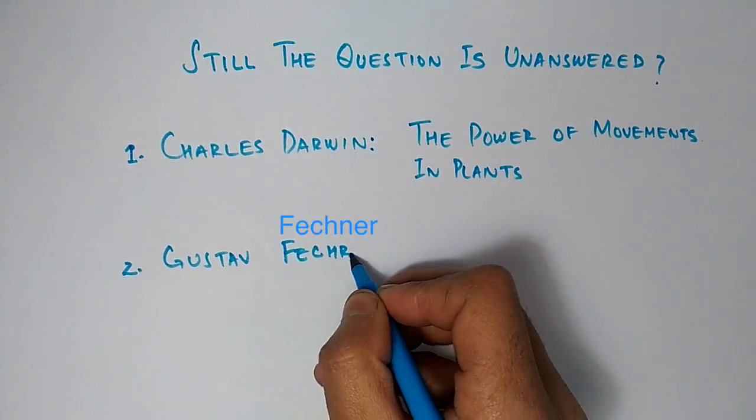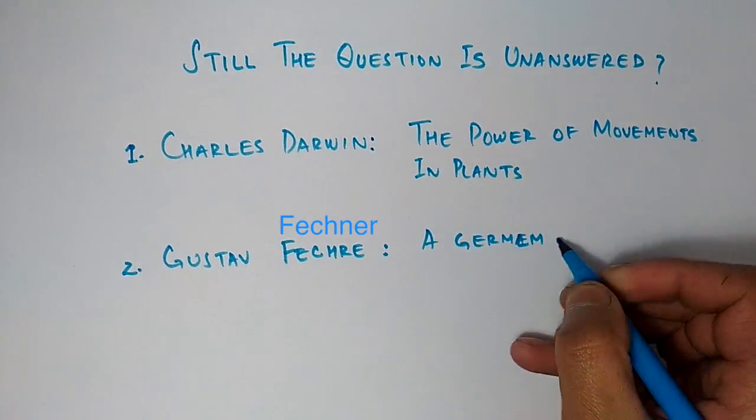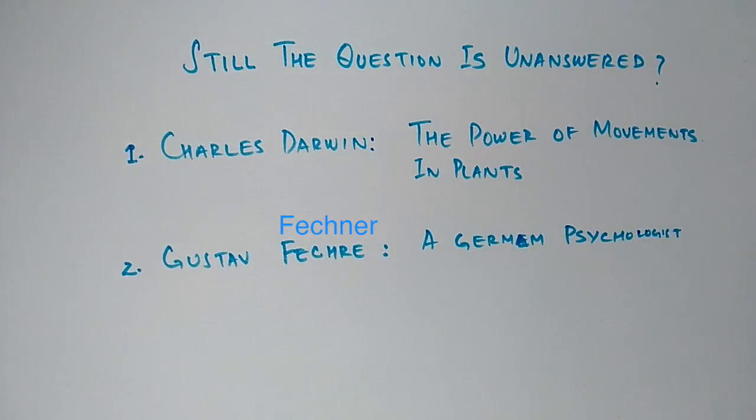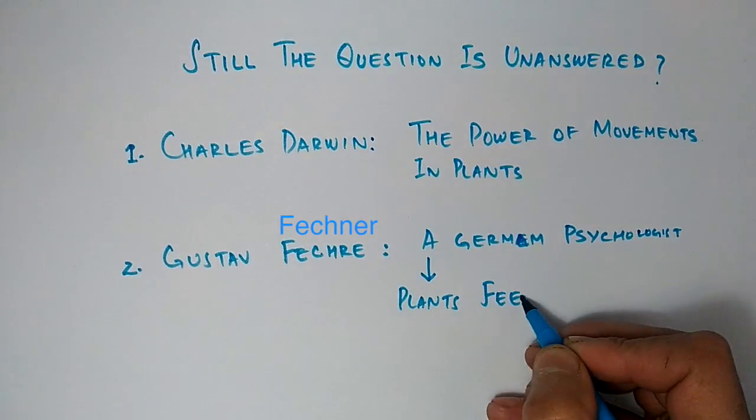There was another scientist named Gustav Fechner, a German psychologist. He experimented on plants and gave his observation where he said that plants have emotions and feelings too.